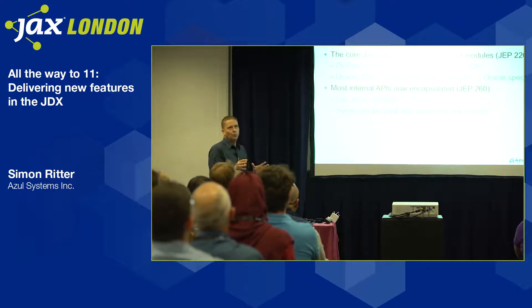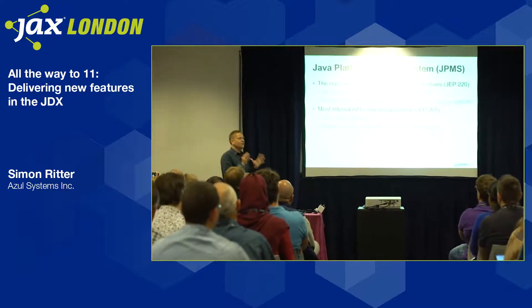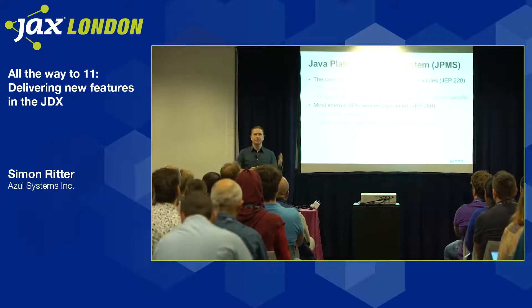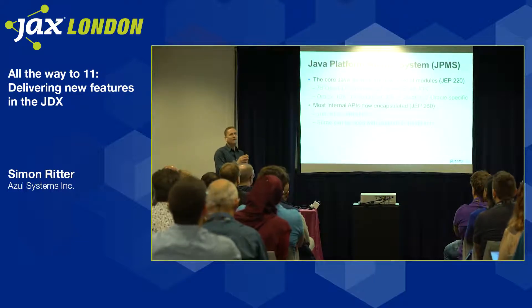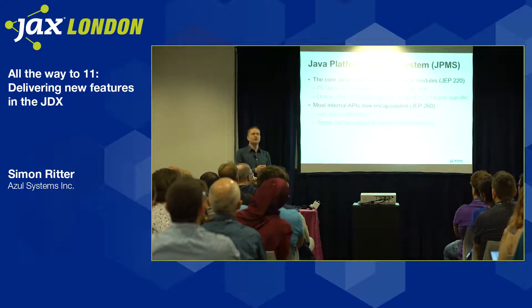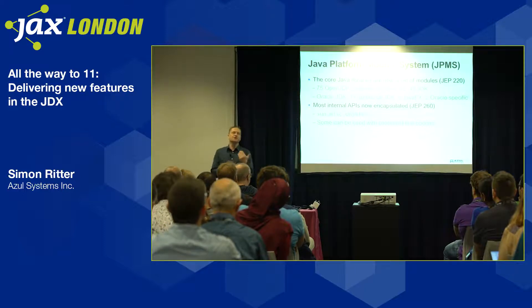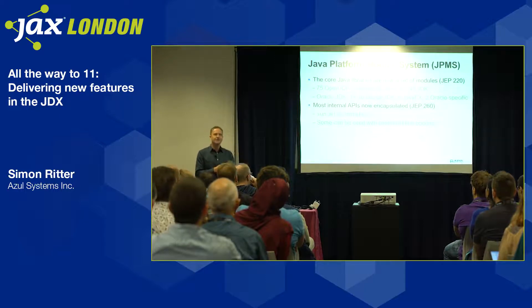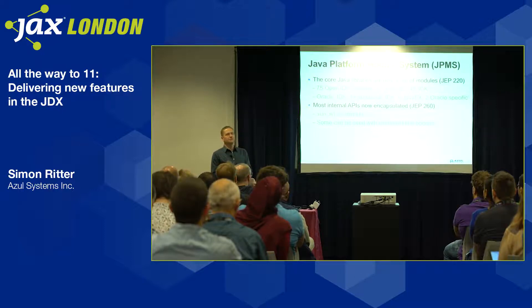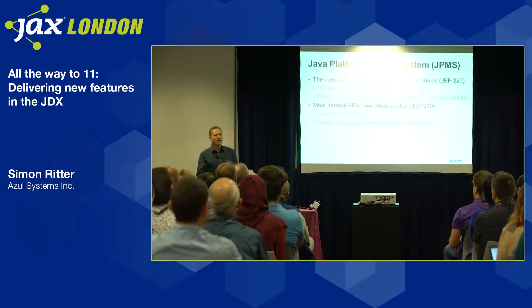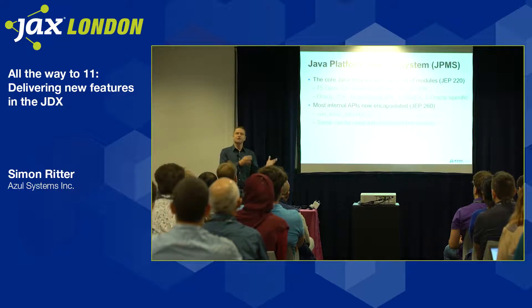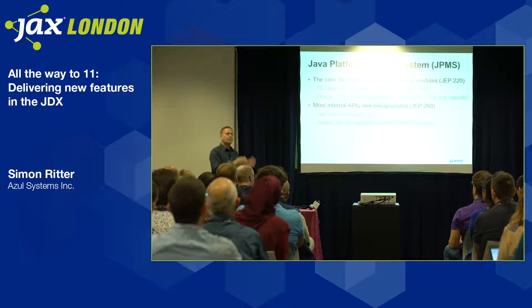Project Jigsaw — or the Java Platform Module System as it's properly known — was about tackling the growth of Java's public APIs. Back in JDK 1.0 there were 211 public classes. By JDK 8 that had grown to about 4,500 public classes, which is great for developers — we don't have to write our own semaphore class or greylist class. But the problem was that everything had been added to rt.jar and tools.jar, two monolithic jar files containing all of those classes.